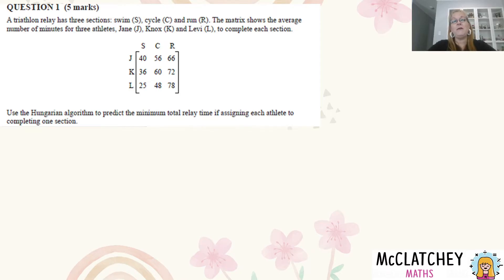A triathlon relay has three sections: swim, cycle and run. This matrix shows the average number of minutes for three different athletes - Jane, Knox and Levi - to complete each of those sections or legs of the triathlon. We're going to use a Hungarian algorithm to predict the minimum total relay time if assigning each athlete to complete one section.